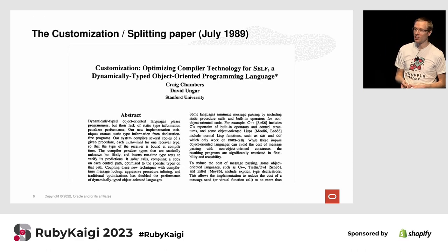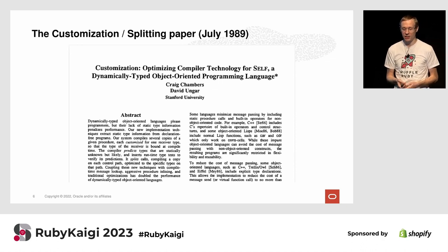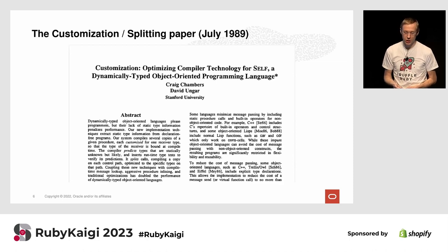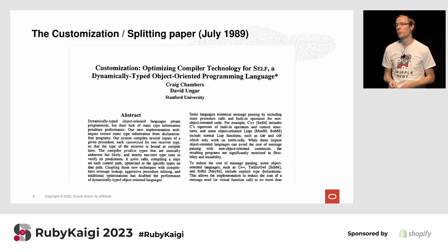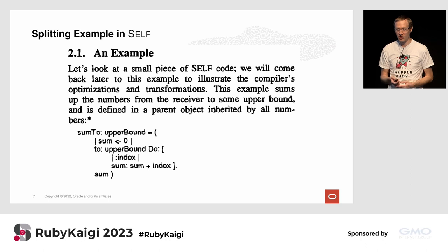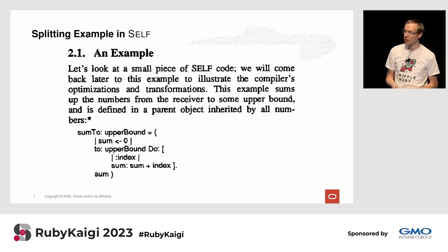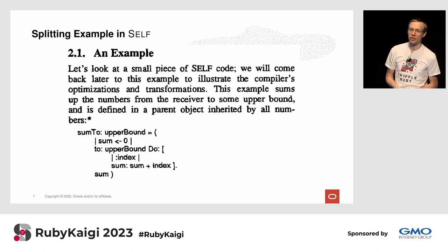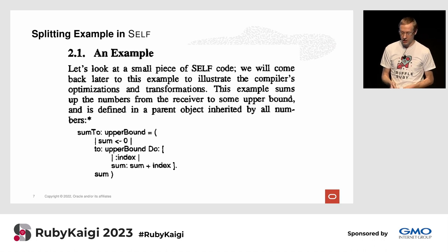Splitting was invented in a 1989 paper by Craig Chambers and David Ungar at Stanford, and they call it the customization of splitting. What's really amazing about this paper is that the example they use, which is in Self code, actually applies to Ruby today — it's very similar.